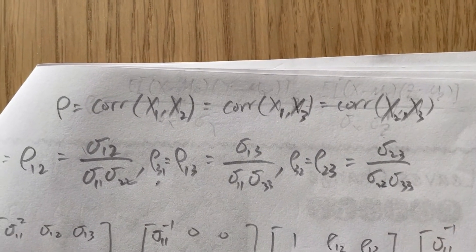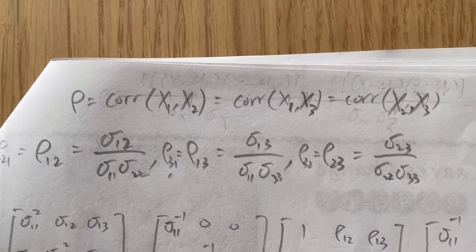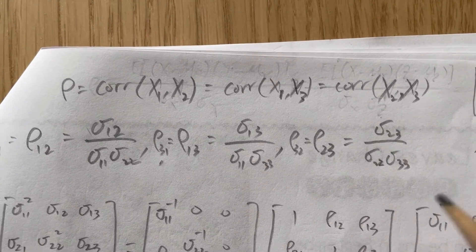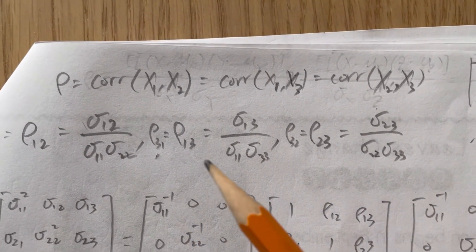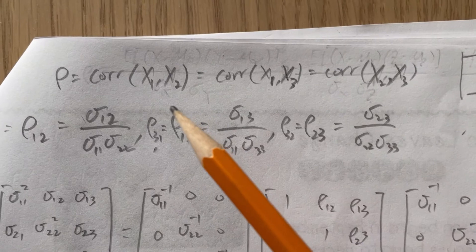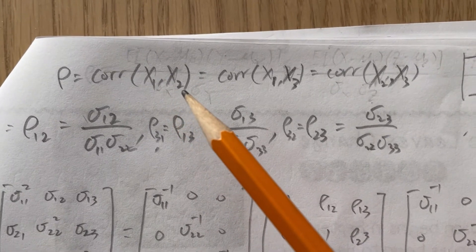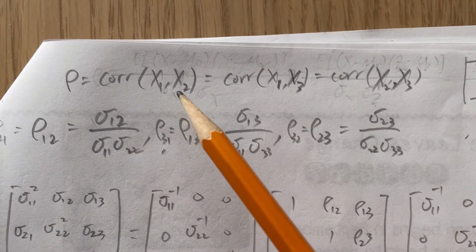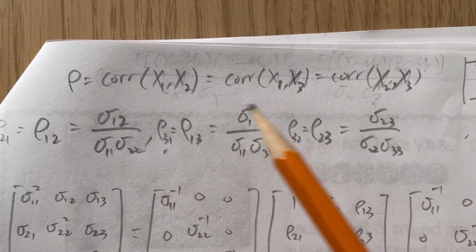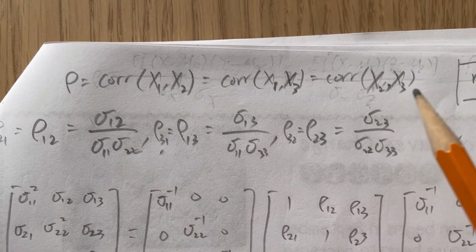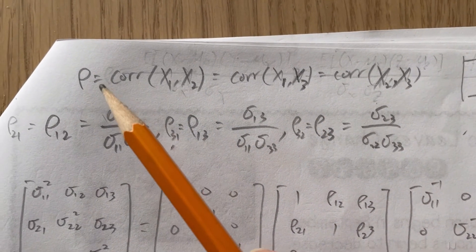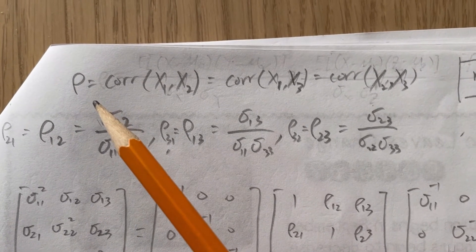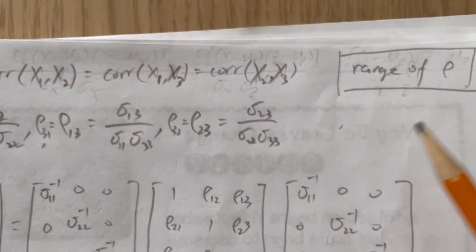Hello everyone. Today we are going to talk about a problem. The problem is: given three random variables x1, x2, and x3, if the correlations between x1 and x2, x1 and x3, and x2 and x3 are all equal — let's call that value rho — then what is the range of rho?